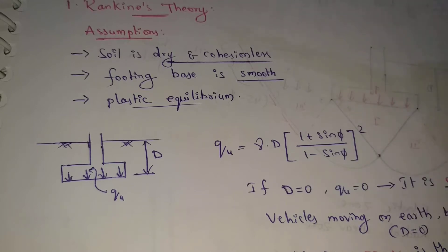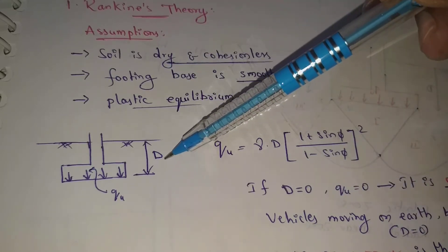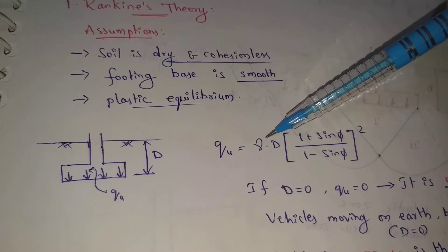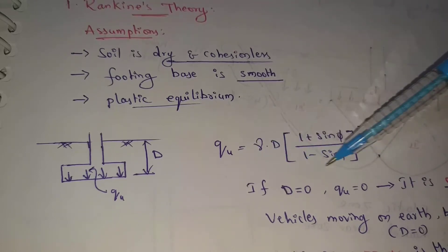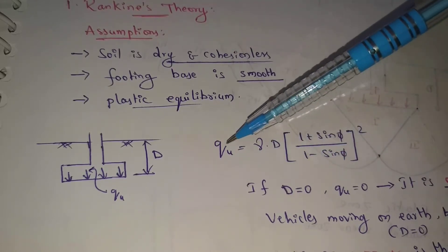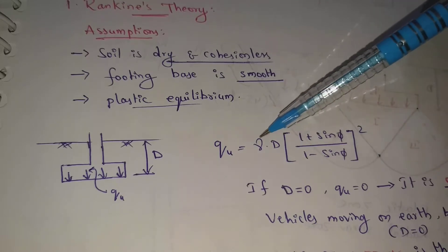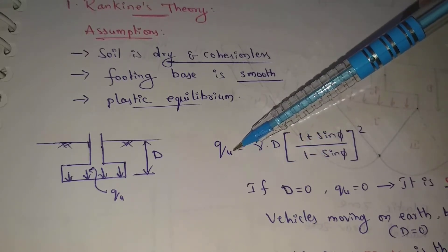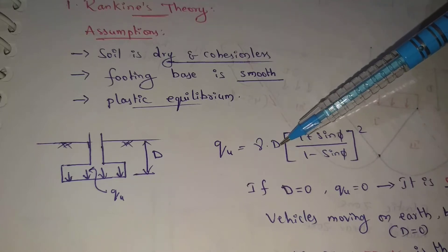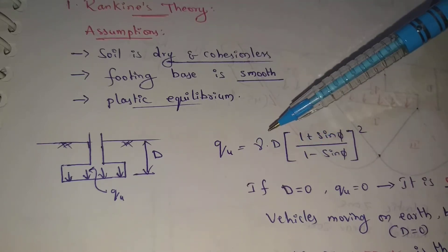If d equal to 0, if d value is 0 for example, here this becomes 0, this total value is 0. Q value is 0, ultimate bearing capacity value is 0. This is wrong.